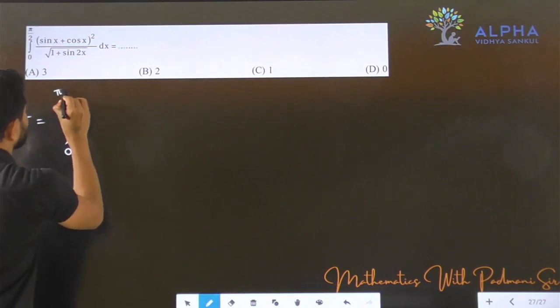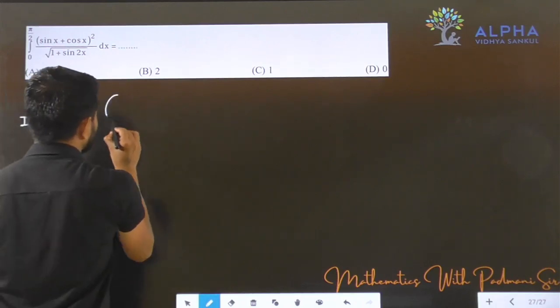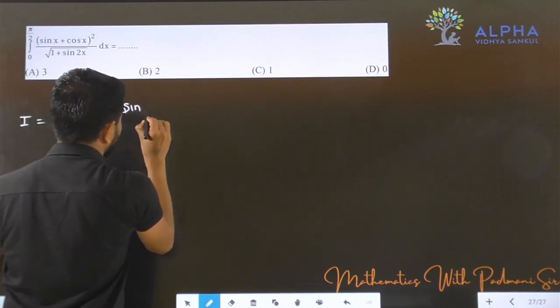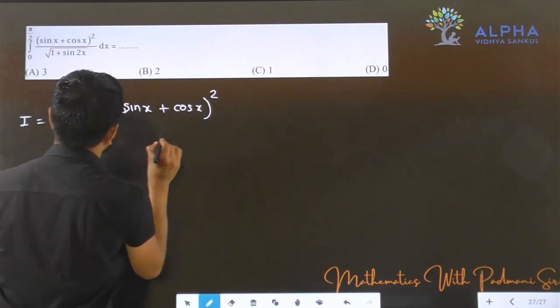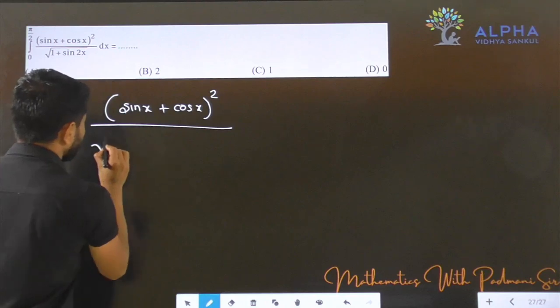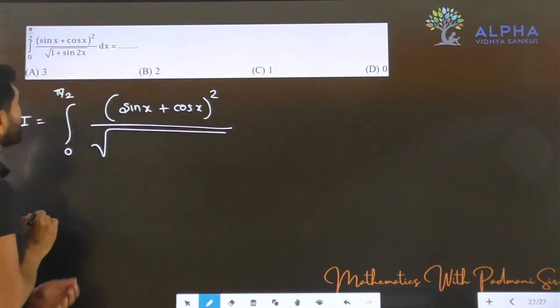sin x plus cos x whole square, and we have to say 1 plus sin 2x, 1 plus sin 2x vadhe hoon chhe bai.